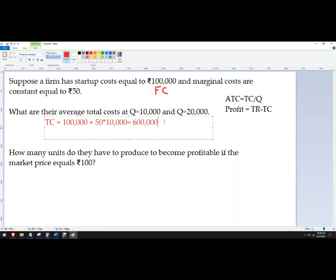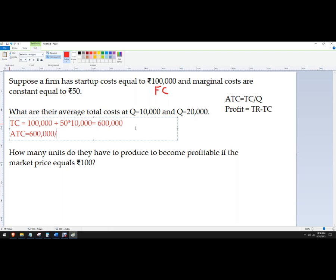And then if I want the average total cost of that, I just need to divide it. So average total cost in this case is 600,000 rupees divided by 10,000.